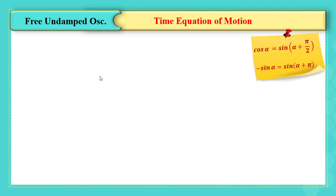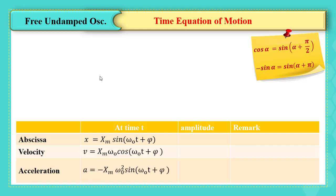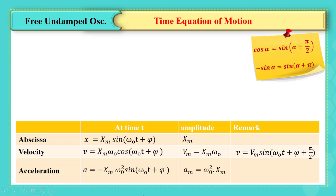After defining the time equation, we can define velocity and acceleration time equations by taking derivatives. The amplitude of x is xm, that of v is xm·ω₀, and that of acceleration is ω₀²·xm, always positive. v can be written as vmax·sin(ω₀t + φ + π/2), since cos(α) = sin(α + π/2). The acceleration a = −ω₀²x can be written as amax·sin(ω₀t + φ + π), since −sin(α) = sin(α + π). This is used to convert between cosine and sine forms.